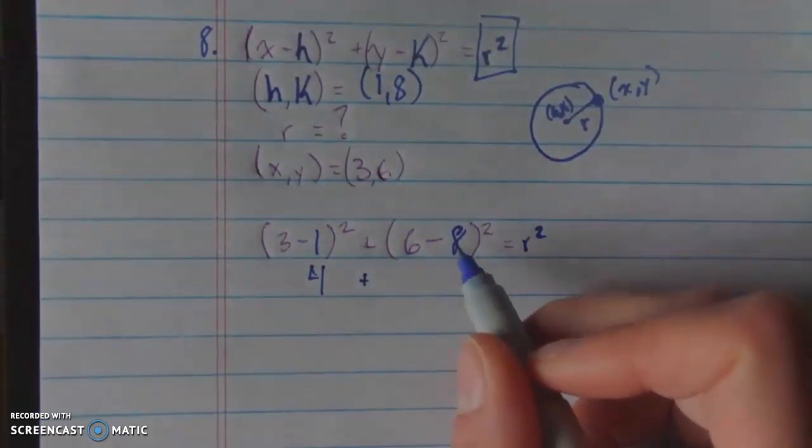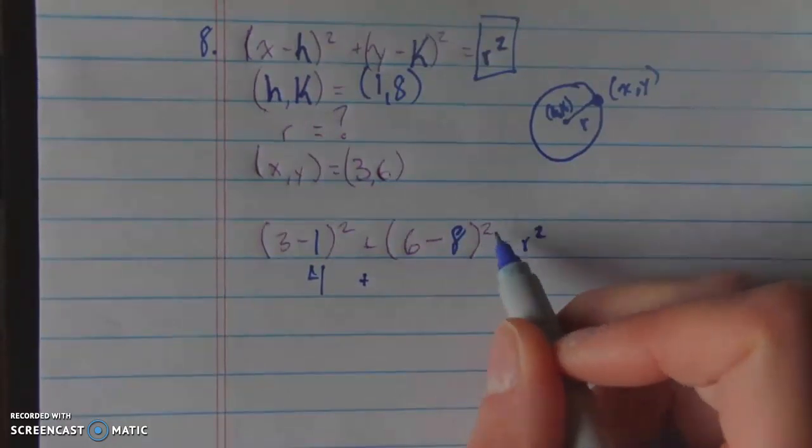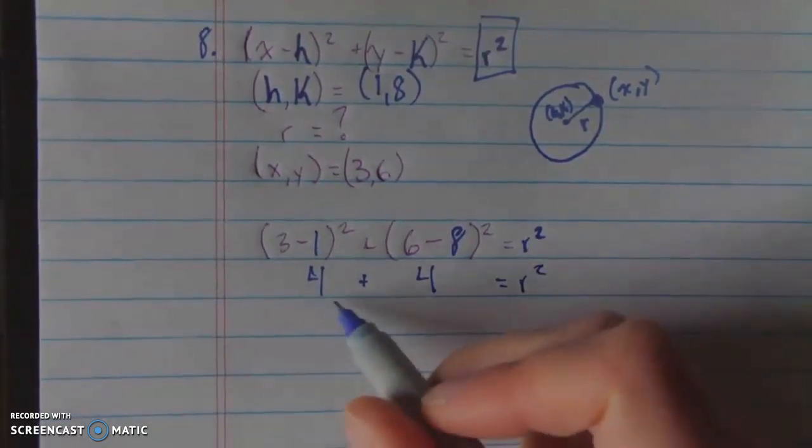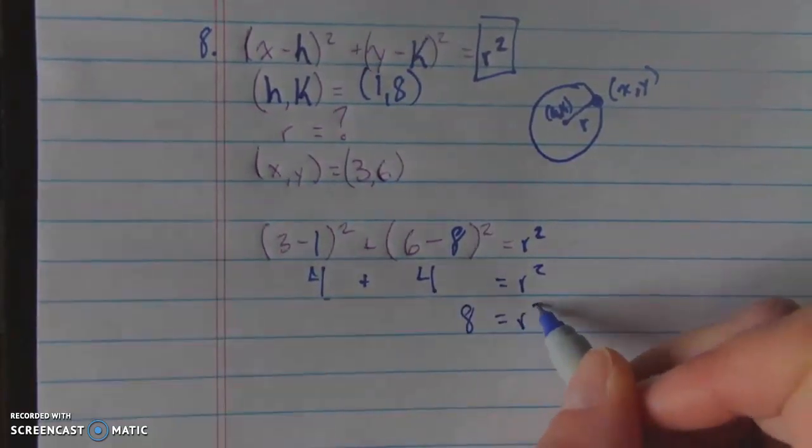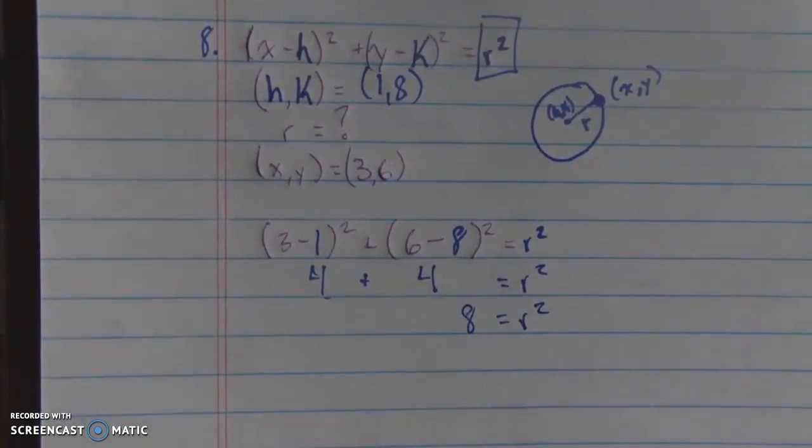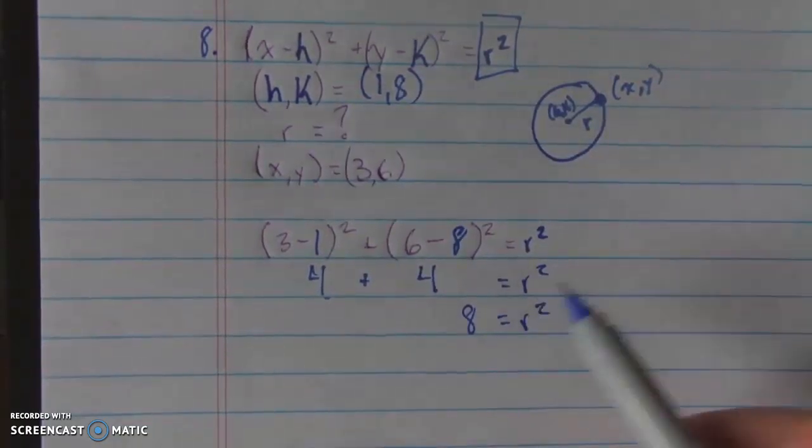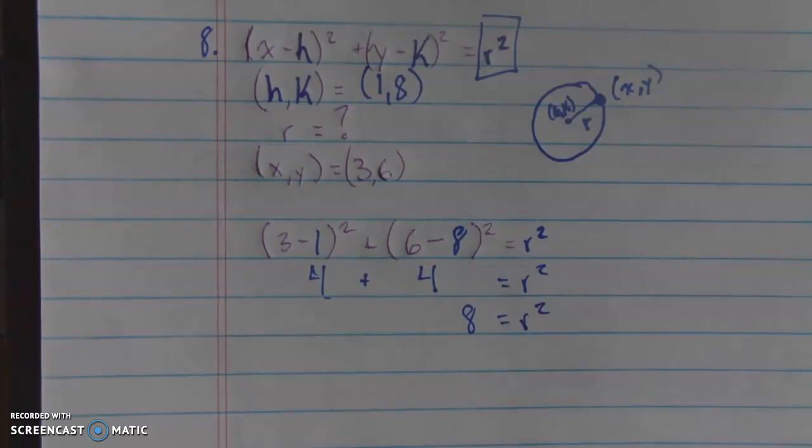Square that and all of this combined will equal my r squared. And I know that 3 minus 1 is 2, and 2 squared is 4. So this is 4. Plus 6 minus 8, which is negative 2, squared gives me a positive 4, and that's equal to r squared, which means 4 plus 4 is 8, and 8 equals r squared.